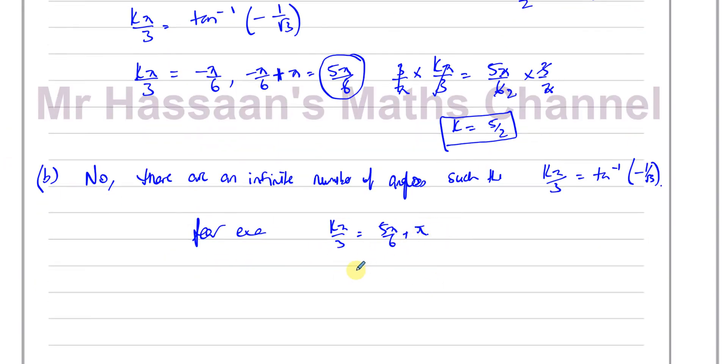If we do this, it will be k times π/3 equals 5π/6 plus 6π/6, which is 11π/6. If I multiply by 3 over π on both sides, the π's cancel, we're going to have 5.5. So k equals 5.5 will also be another value you can check.